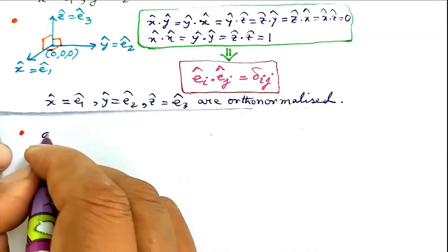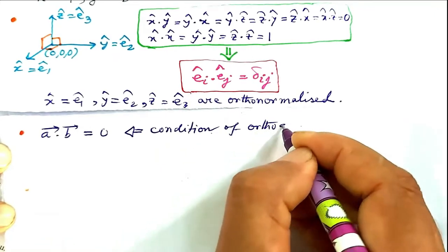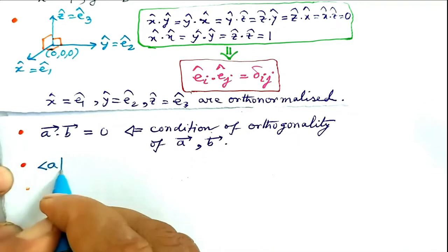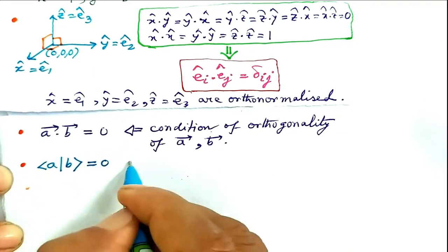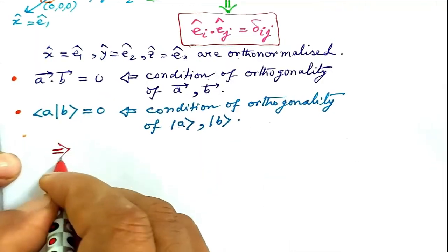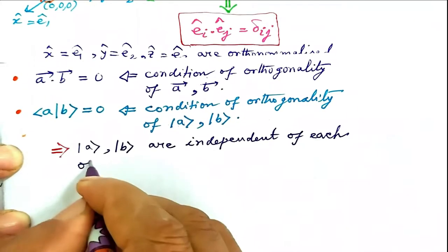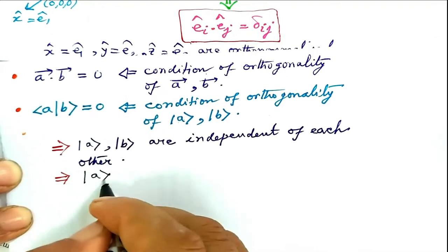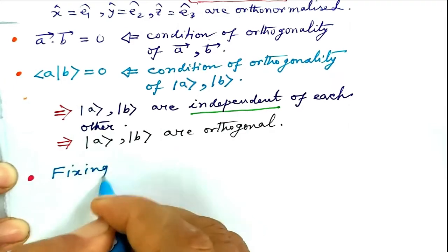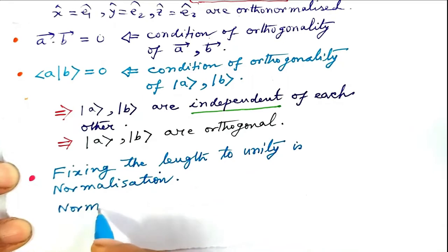The relation vector A dot vector B equals zero is the condition of orthogonality of vector A and vector B. In bra-ket notation, bra-A ket-B equal to zero is the condition of orthogonality of ket-A and ket-B. This also means that ket-A and ket-B are independent of each other — they are orthogonal. Fixing the length to unity is normalization, that is, setting the norm to 1.